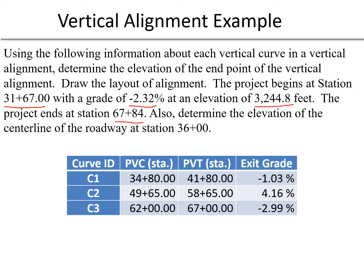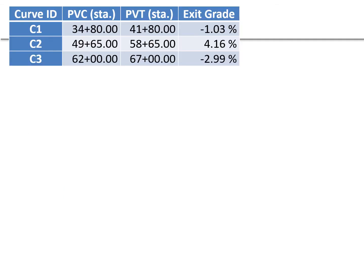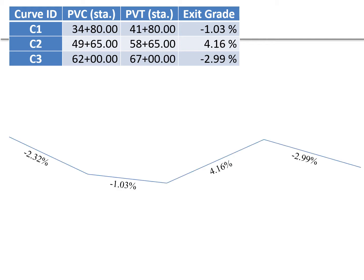We're also asked to determine the elevation of the center line of the roadway at station 36. It always helps to draw the given information, particularly for alignment problems. We can start by drawing the tangents — they don't have to be extremely precise, just in relative terms. Our entering grade for the overall project is negative 2.32 percent, and the project starts at station 31 plus 67 with an elevation of 3244.8 feet.